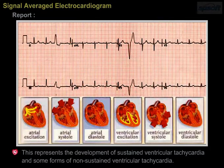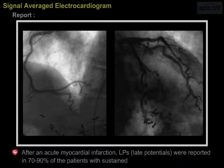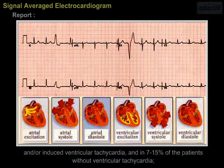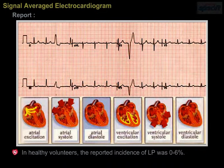This represents the development of sustained ventricular tachycardia and some forms of non-sustained ventricular tachycardia. After an acute myocardial infarction, late potentials were reported in 70–90% of patients with sustained and/or induced ventricular tachycardia, and in 7–15% of patients without ventricular tachycardia. In healthy volunteers, the reported incidence of late potentials was 0–6%.